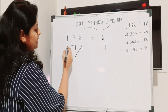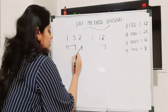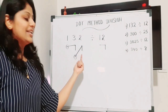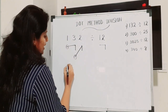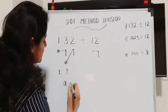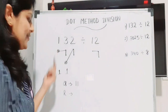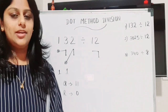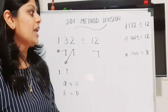Now we count the number of beginnings. In the first column we have one beginning, and in the second column we also have one beginning. In the third column there is no new beginning — it is only the ending of the previous group. So the quotient is 11 and the remainder is zero.